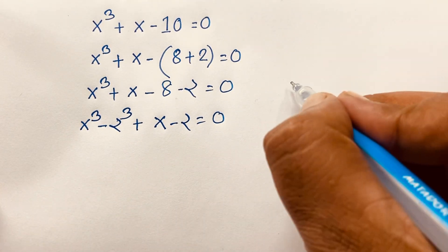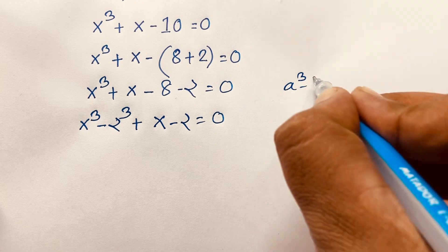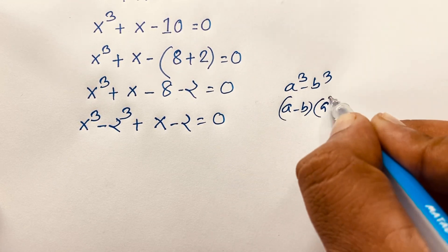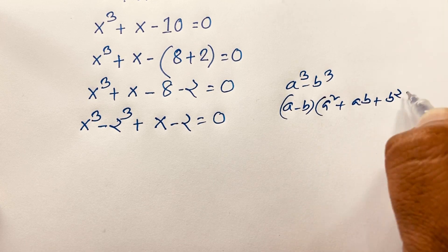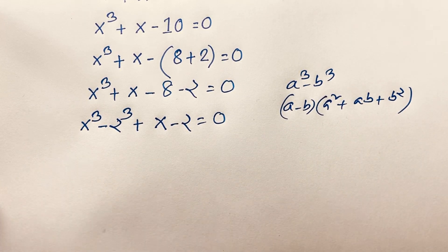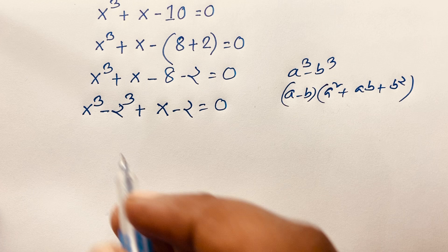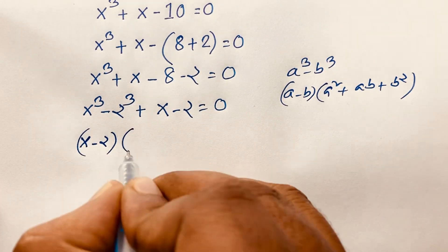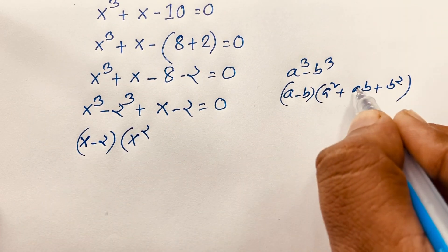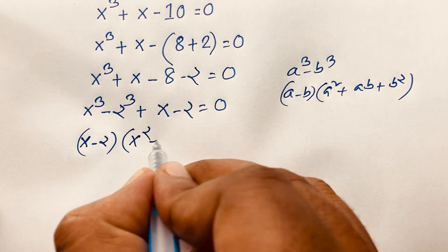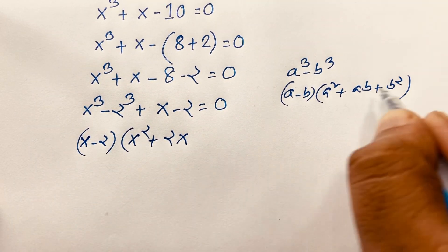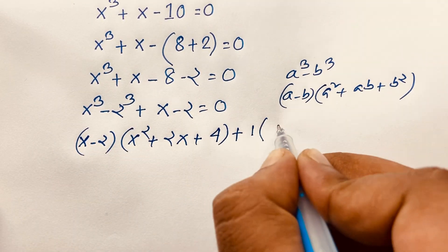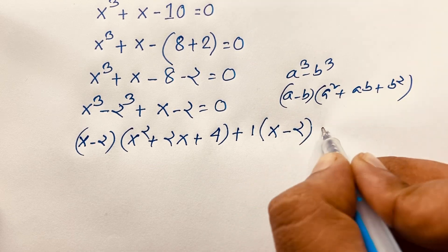Now, if I apply the difference of cubes formula — a cubed minus b cubed equals (a minus b) times (a squared plus ab plus b squared) — with a equal to x and b equal to 2, it becomes (x minus 2)(x squared plus 2x plus 4). And the remaining x minus 2 gives a common factor.